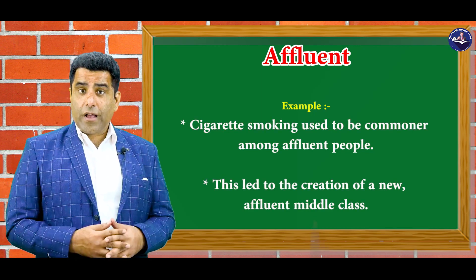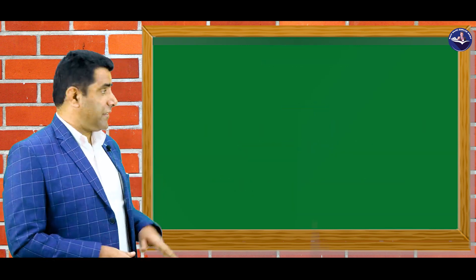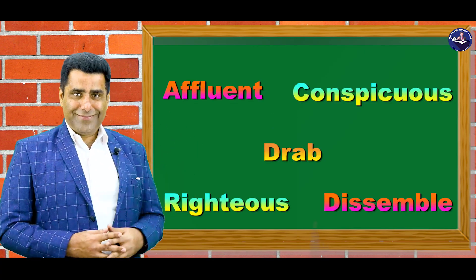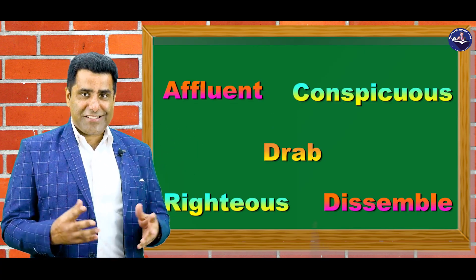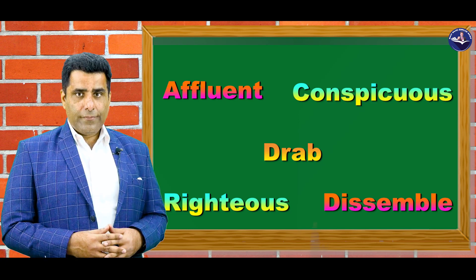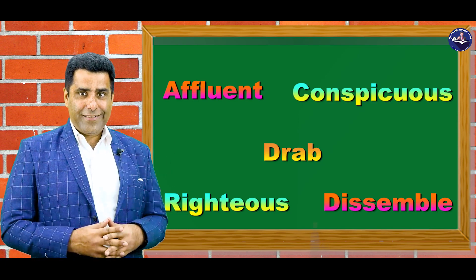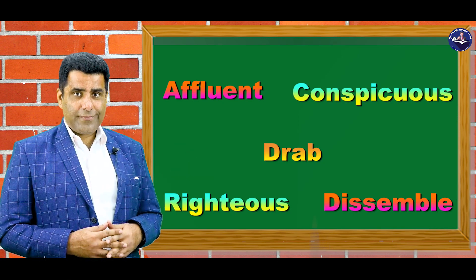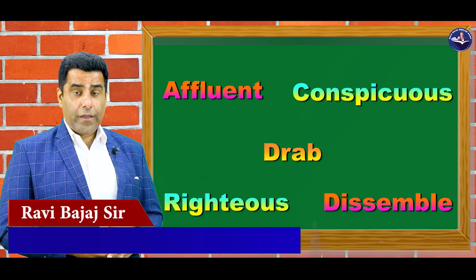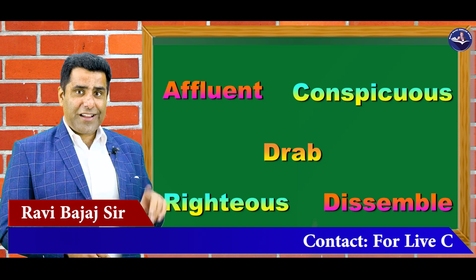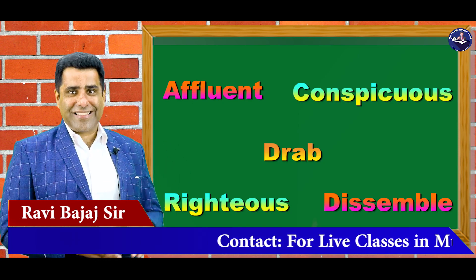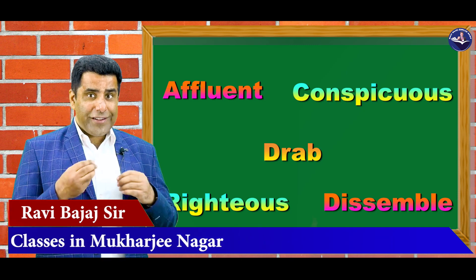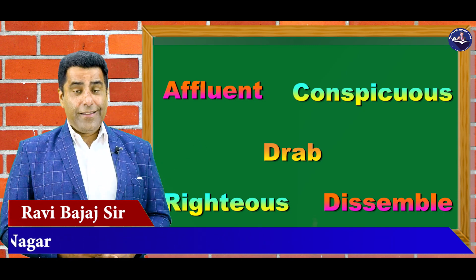So guys, ab hum sabhi words ko ek baar revise karte hain. Five words aap ke saamne jo abhi abhi aap ne seekhe. Drab — neeras — Rab se yaad kiya. Dissemble — paakhandi — assemble se yaad kiya. Righteous — imaandar — right se yaad kiya. Conspicuous — spost (clear) — cons se yaad kiya. And last word is affluent — ameer — fluent English se yaad kiya.